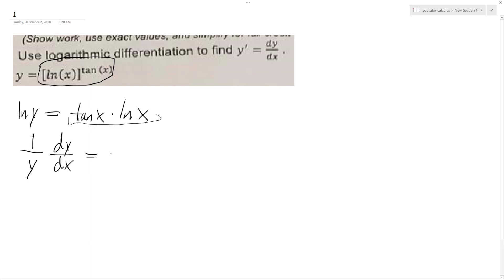And then we're going to use the product rule on the right side. So derivative of tangent of x, secant squared x, times natural log x, and then plus tangent of x times 1 over x.